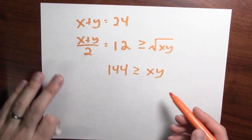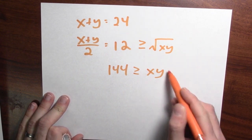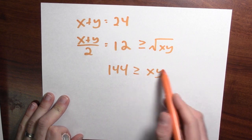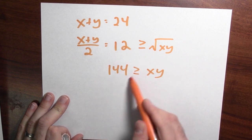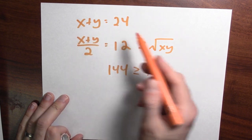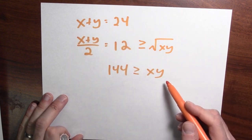And that's exactly what I'm trying to figure out. I'm trying to figure out how big can the product of x and y be if I know what the sum is. And what this is telling me is that the product can be no bigger than 144 with equality when x and y are both equal. And that happens when they're both equal to 12.